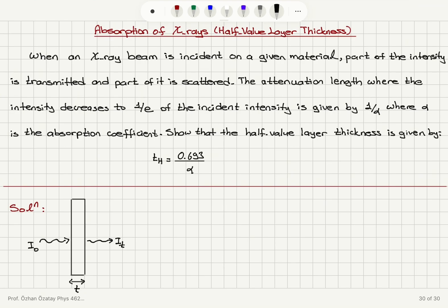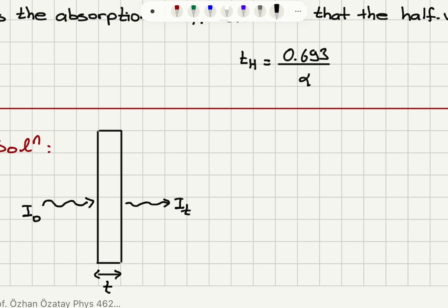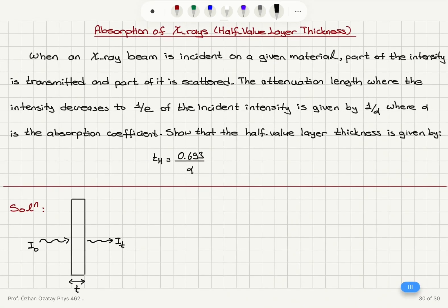As you can see, when we have an X-ray beam incident on a material with thickness t, there will be part of the beam that is transmitted with intensity I_t. The transmitted intensity is related to the incident intensity I₀ as I₀ times e to the minus alpha t.